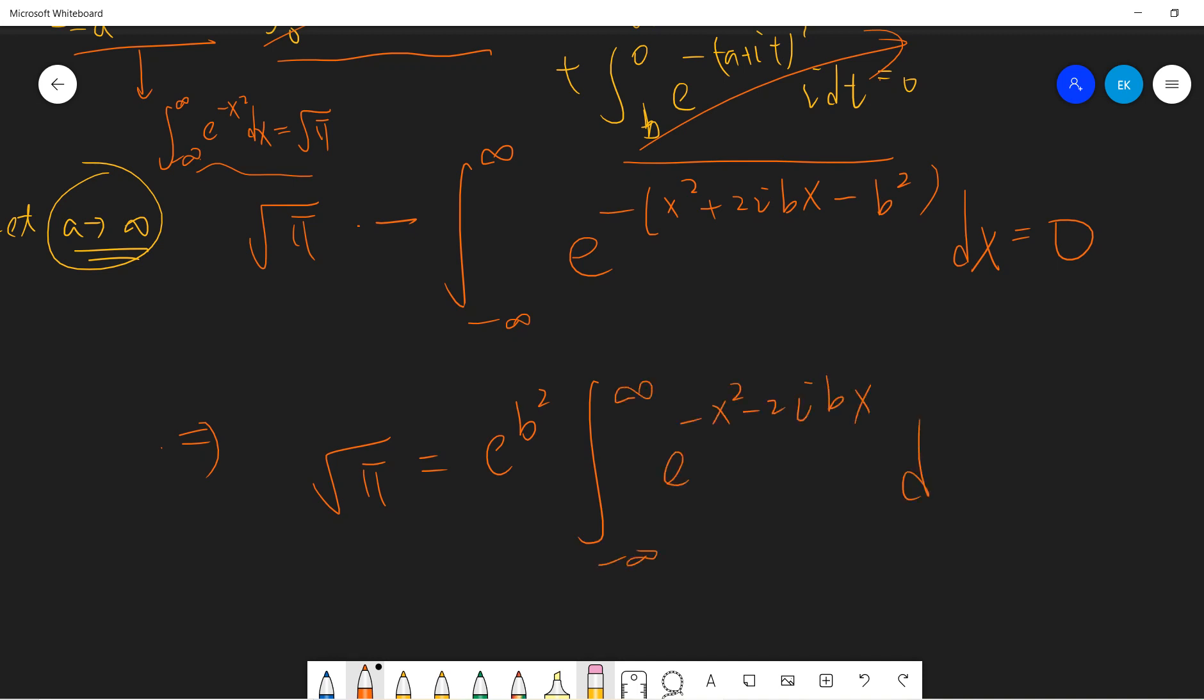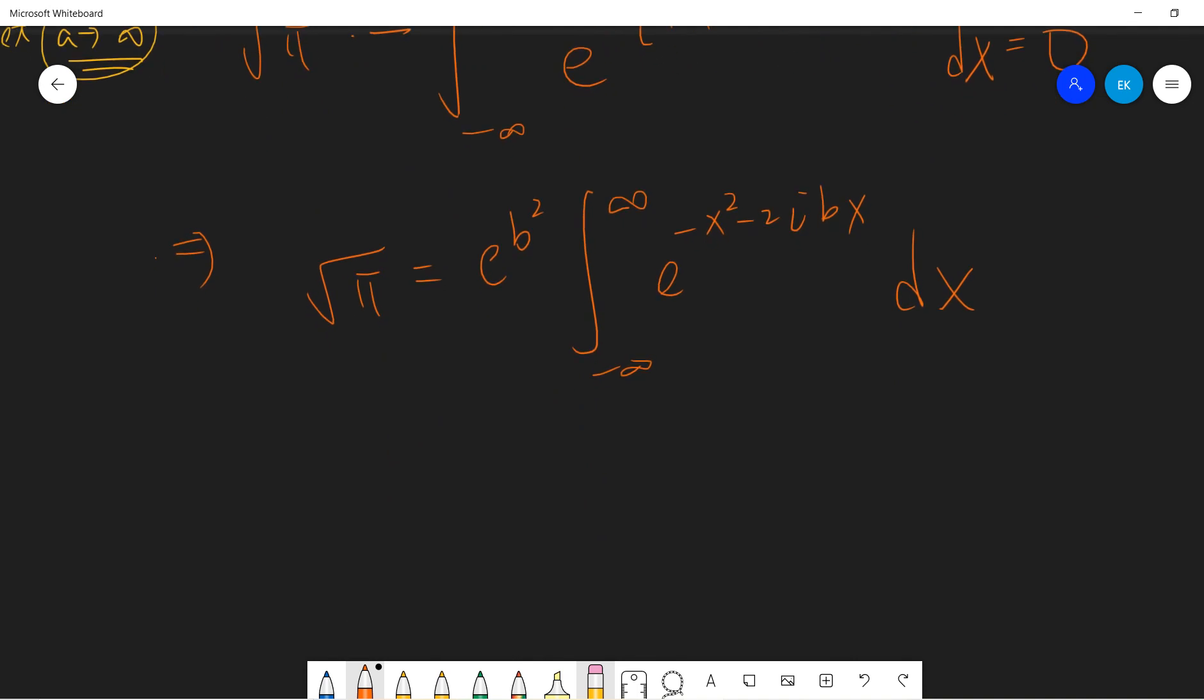This last term can be written as exponential negative x squared times (cosine 2bx plus i sine 2bx). This is an odd function, so the integration of the sine part is even, so actually we don't need this.